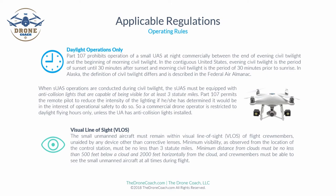Part 107 permits the remote pilot to reduce the intensity of anti-collision lighting if determined to be in the interest of operational safety. A small unmanned aircraft must remain within visual line of sight (VLOS) of flight crew members, unaided by any device other than eyeglasses or corrective lenses. Minimum visibility as observed from the control station must be no less than three statute miles. The minimum distance from clouds must be no less than 500 feet below a cloud and 2,000 feet horizontally from that cloud.